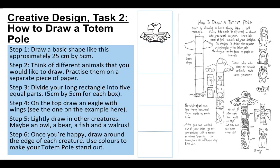Then step five: you're going to draw the other creatures in. You can decide which creatures you're going to draw in those other boxes. Step six: once you're happy, draw around the edge of each creature — maybe use a black felt tip to make it stand out. Then use bright colours to colour in your totem pole to make it stand out.